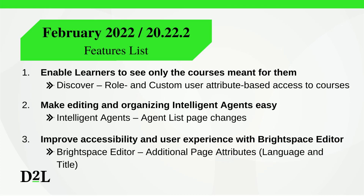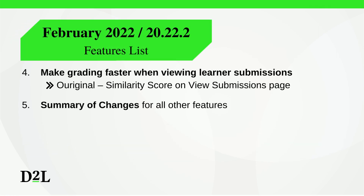This month we're highlighting the following features: enable learners to see only the courses meant for them with Discover role and custom user attribute-based access to courses; make editing and organizing intelligent agents easy with changes to the intelligent agent list page; improve accessibility and user experience with Brightspace Editor's additional page attributes — language and title; make grading faster when viewing learner submissions with original similarity score on the view submissions page; and finally, a summary of the changes made with all the other features.